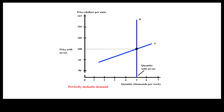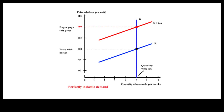When buyers continue to buy the same quantity regardless of prices, the demand curve is a vertical line, indicating perfectly inelastic demand. With perfectly inelastic demand, the after-tax price will go up by the full amount of the tax, and buyers end up paying the full share of the per-unit sales tax.